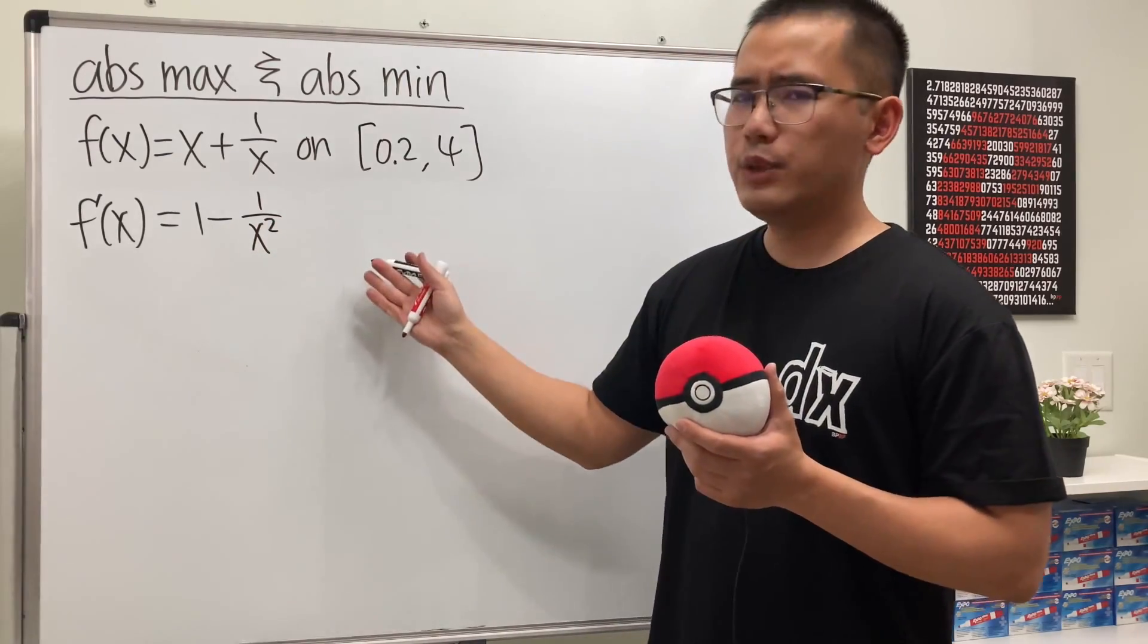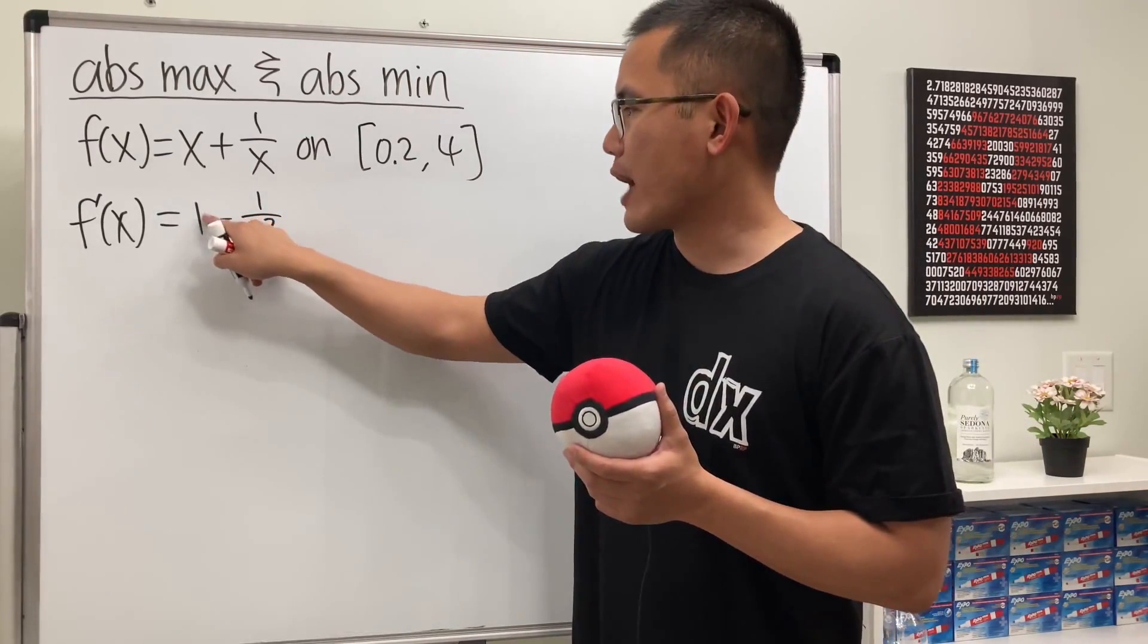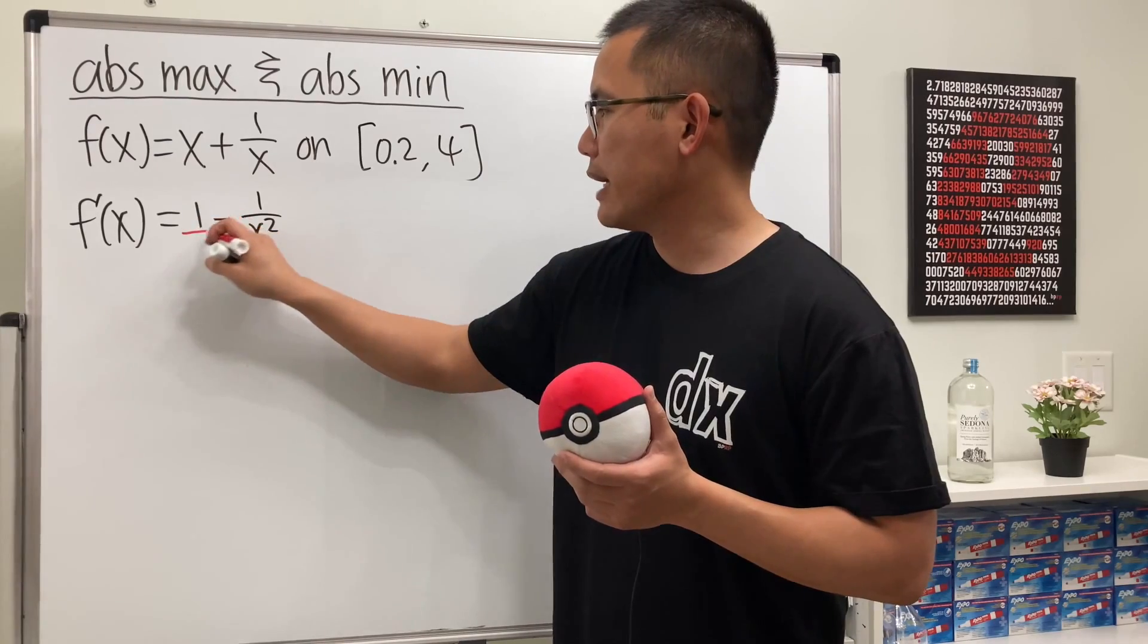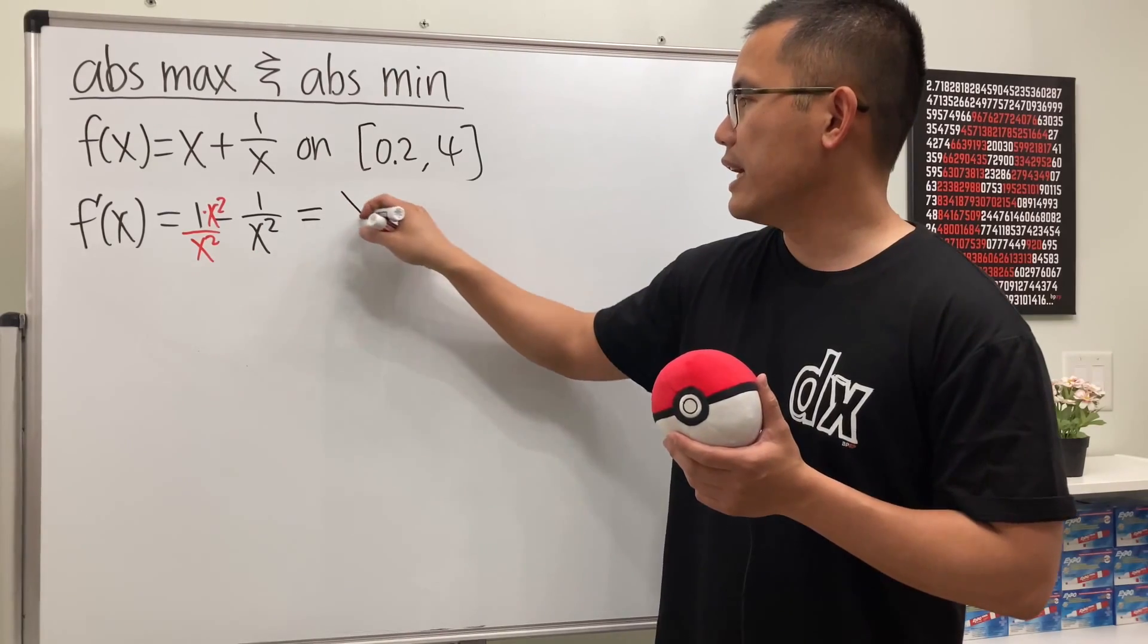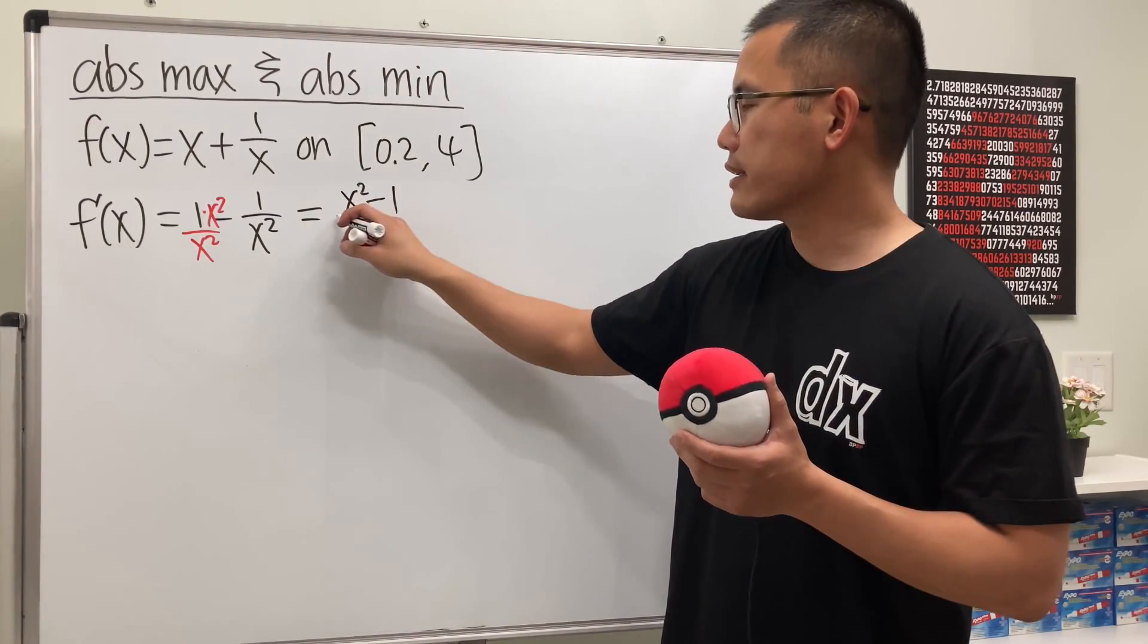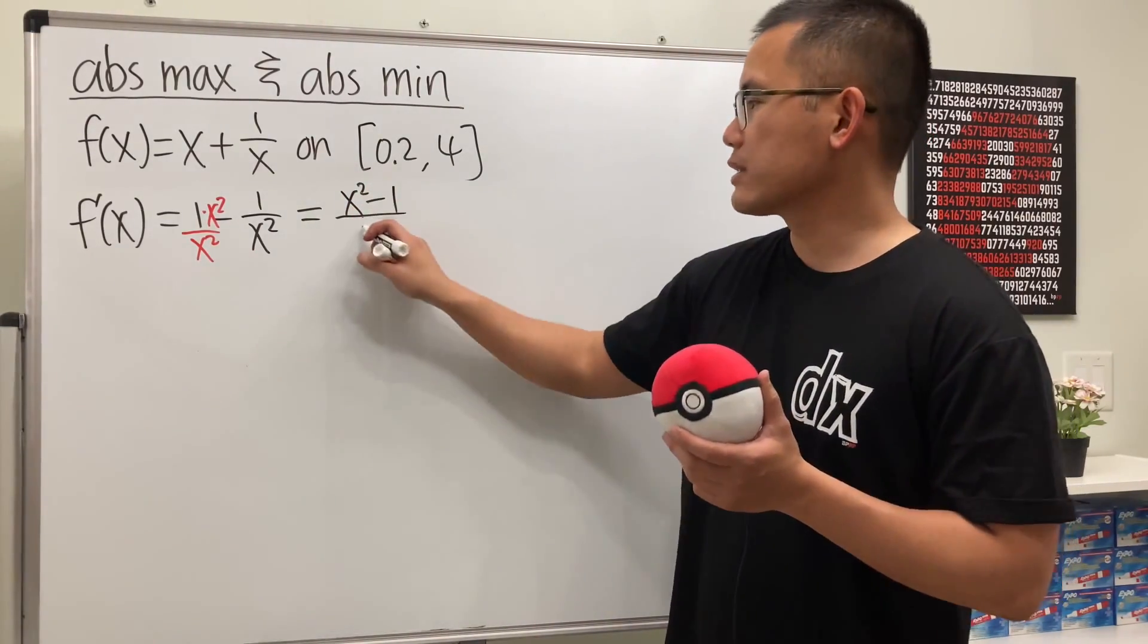Before we set this equal to 0, let's combine the fractions. So let's multiply the bottom and the top by x squared so they have the same denominator. And then we will just get x squared minus 1 on the top over x squared.